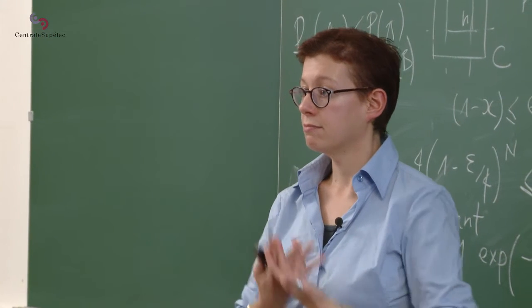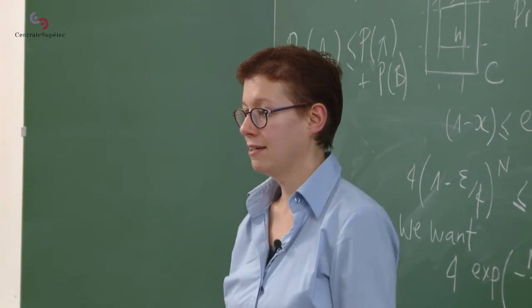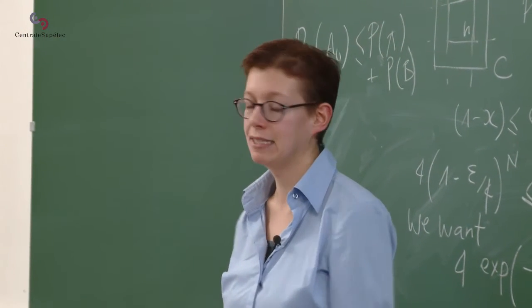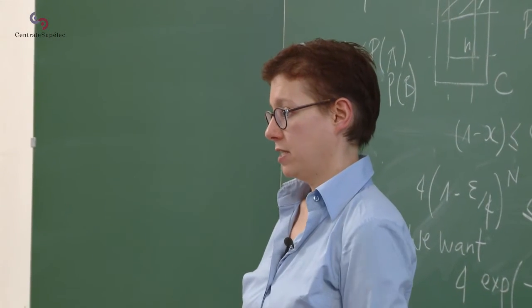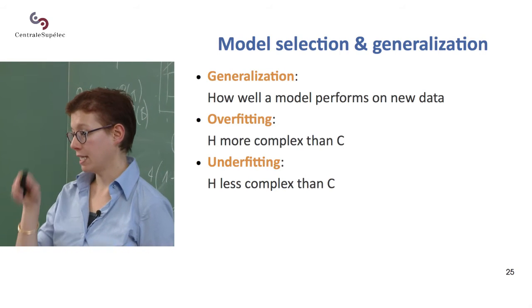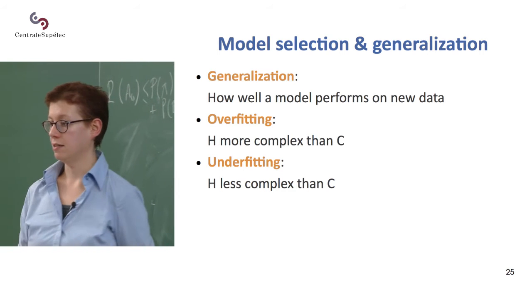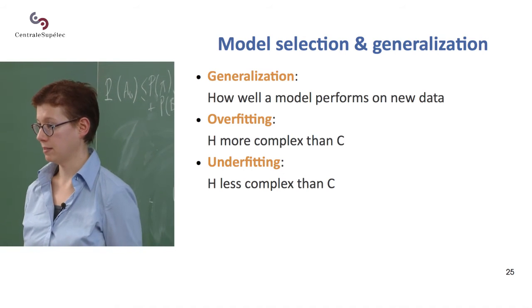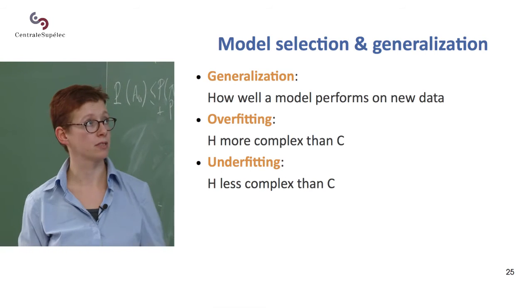So I mean, I think you don't need me to compute VC dimensions to see that a line is less complex than a rectangle. So if you use a line, you're going to underfit. On the other hand, if you use a complex hand-drawn shape, as I was doing before, this is going to be more complex. It comes from a space that's more complex than the space of rectangles, and there's a risk of overfitting.